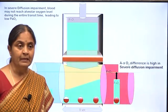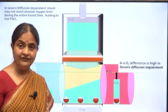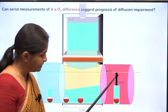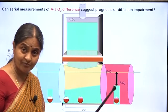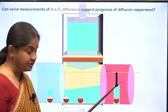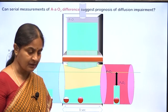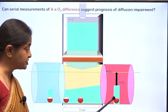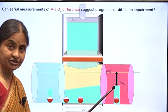If the alveolar-arterial oxygen difference is worsening, does it necessarily mean diffusion impairment is progressing — for example, that membrane thickness has increased due to more interstitial edema? Not really, because in addition to diffusion, there is another factor which affects AAO2 difference: the speed of blood flow.